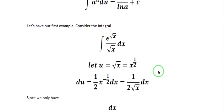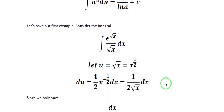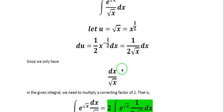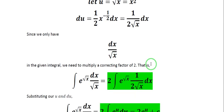So we have e to the u. Our du will be one-half x to the negative one-half dx, which equals 1 over 2 times the square root of x dx. Looking at our given integral, we have e to the u and the remaining term is 1 over the square root of x dx. Since du equals 1 over 2 times square root of x dx, we need to multiply a correcting factor of 2.